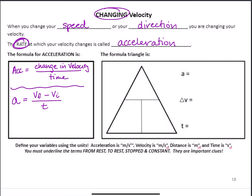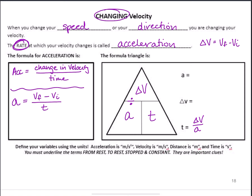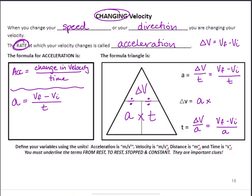For our formula triangle, I'll substitute delta-V for V-final minus V-initial just to keep it less confusing. So the triangle has acceleration, change in velocity, and time. If we divide the change in velocity by acceleration, we calculate time: t = ΔV / a, or (vf - vi) / a. If we divide change in velocity by time, we calculate acceleration: a = ΔV / t, or (vf - vi) / t. If we multiply acceleration times time, we calculate the change in velocity: ΔV = a × t, which can be rewritten as vf - vi = a × t.